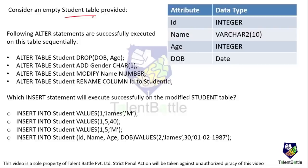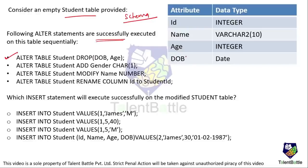Next question: consider an empty student table with a given schema. The following ALTER statements are successfully executed sequentially. First: ALTER TABLE student DROP DOB and age — so DOB and age attributes are removed from the schema. Second: ALTER TABLE student ADD gender with data type CHAR(1) — a new gender attribute is added.